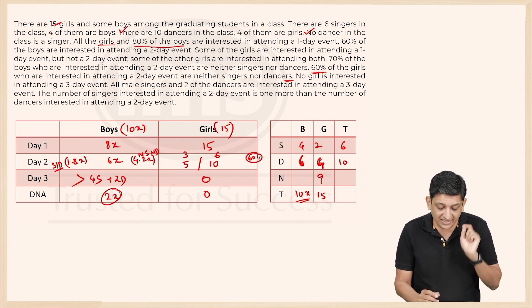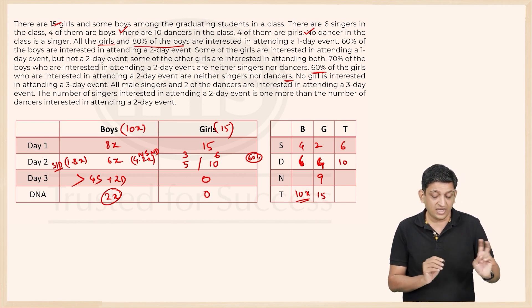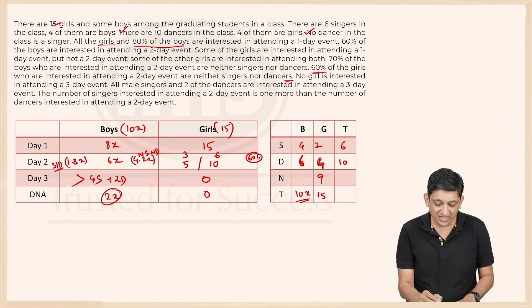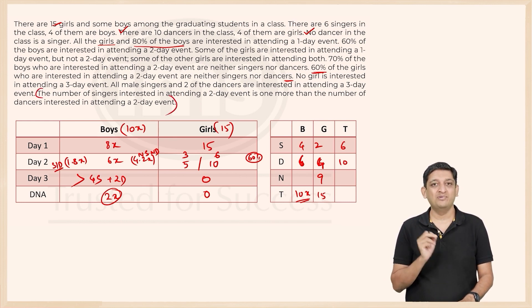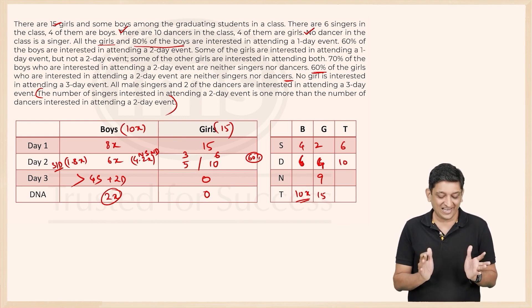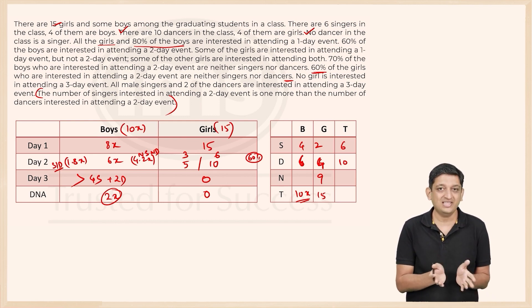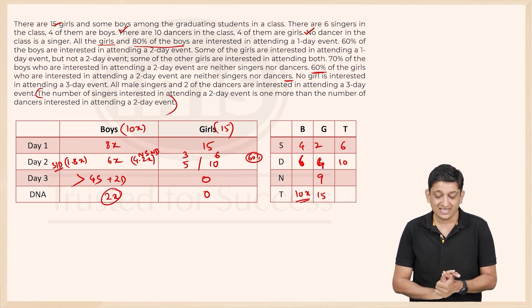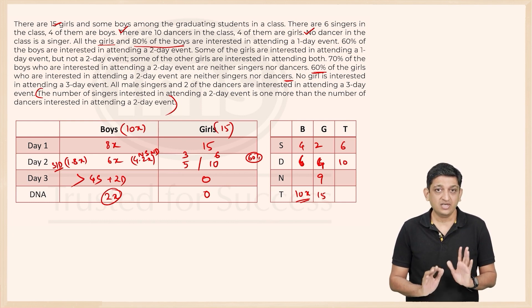We also know one critical piece of information: the number of singers interested in attending the two-day event is one more than the number of dancers interested in the two-day event. This is the key clue that would have helped crack this set in the actual exam — most candidates would not have been able to interpret this bit correctly.